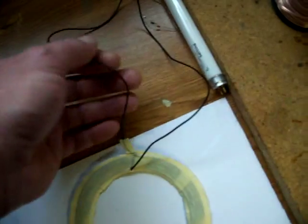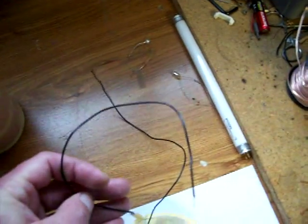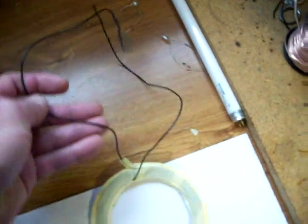And the L2 coil is a pancake coil. Kind of like this one. It's plastic coated copper wire.